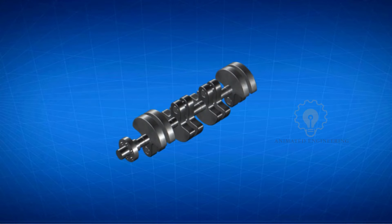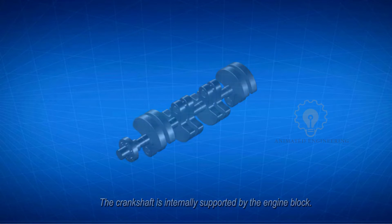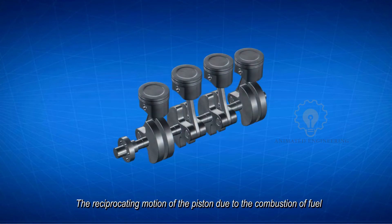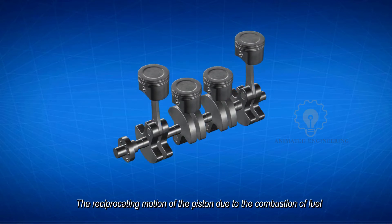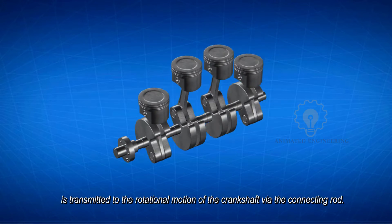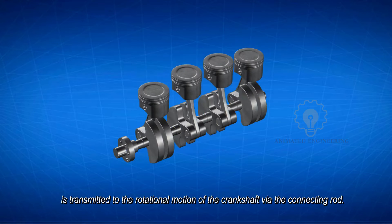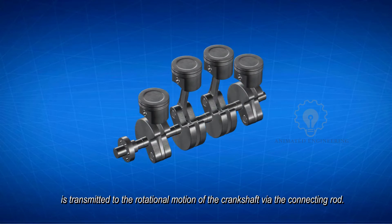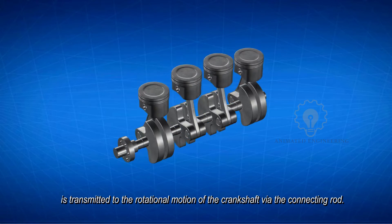The crankshaft is internally supported by the engine block. The reciprocating motion of the piston due to the combustion of fuel is transmitted to the rotational motion of the crankshaft via the connecting rod, which subsequently drives the wheels.